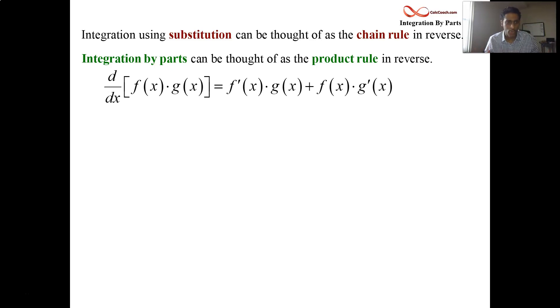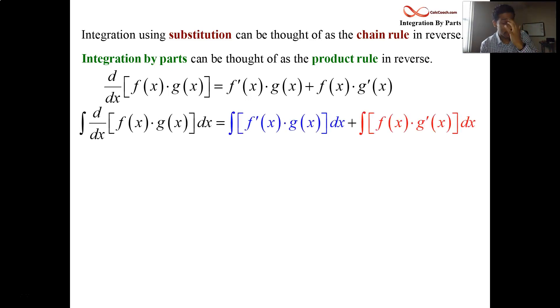Remember the chain, the product rule? Derivative of the product is not the product of the derivatives. You have to take them one at a time and leaving the other function alone and add those two guys together. Using this statement, we're going to derive the formula for integration by parts. Start off by taking the integral of both sides. Integral of the left is equal to the integral of the right. On the right-hand side, integral of a sum is the sum of the integrals. We have two separate integrals there. One is in blue and one is in red.